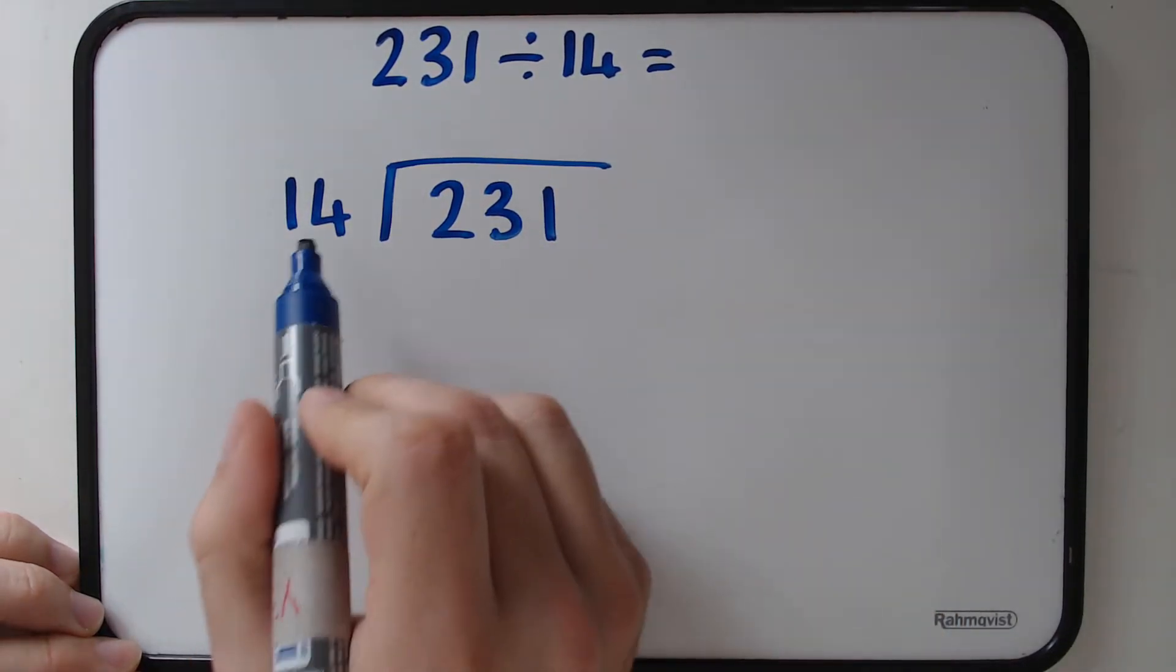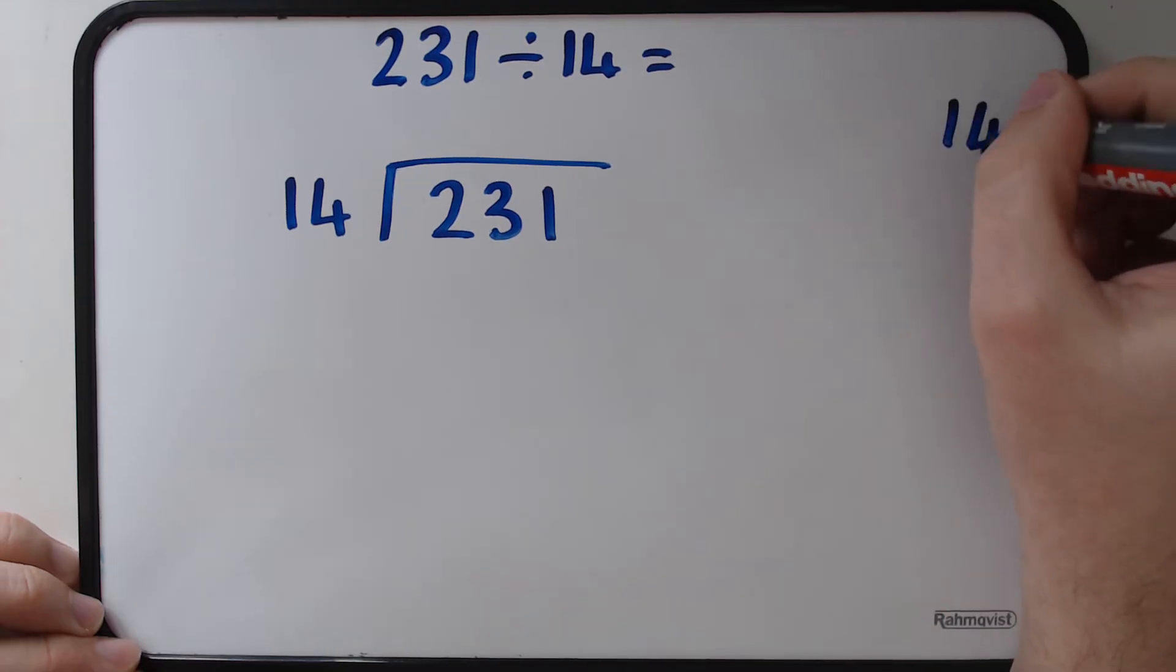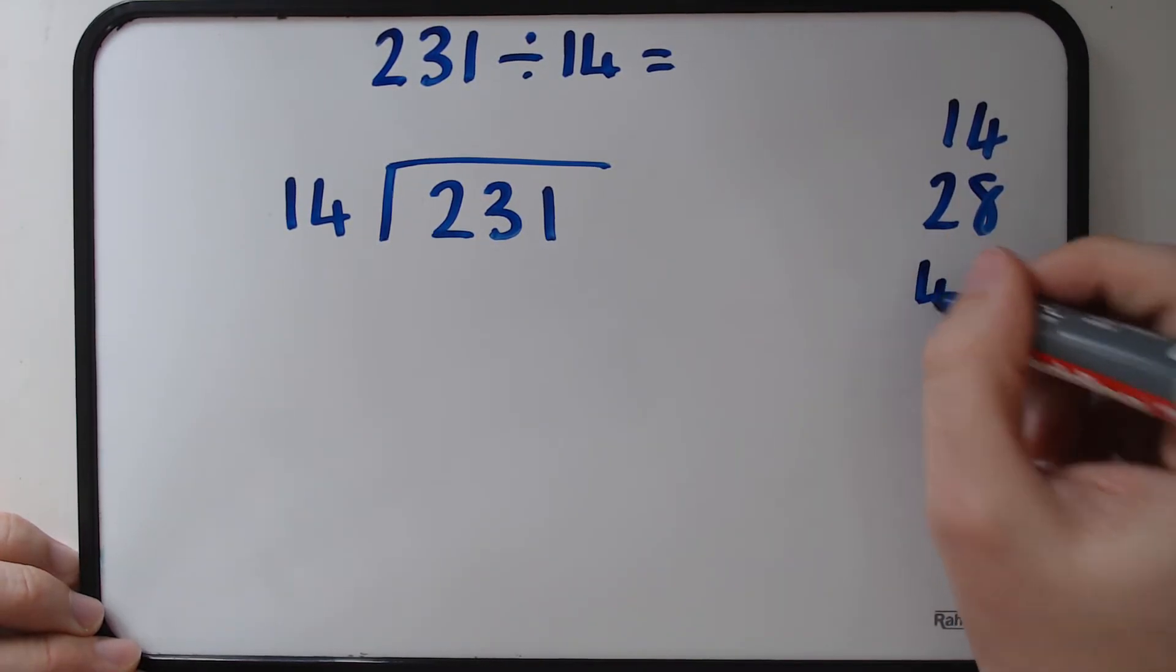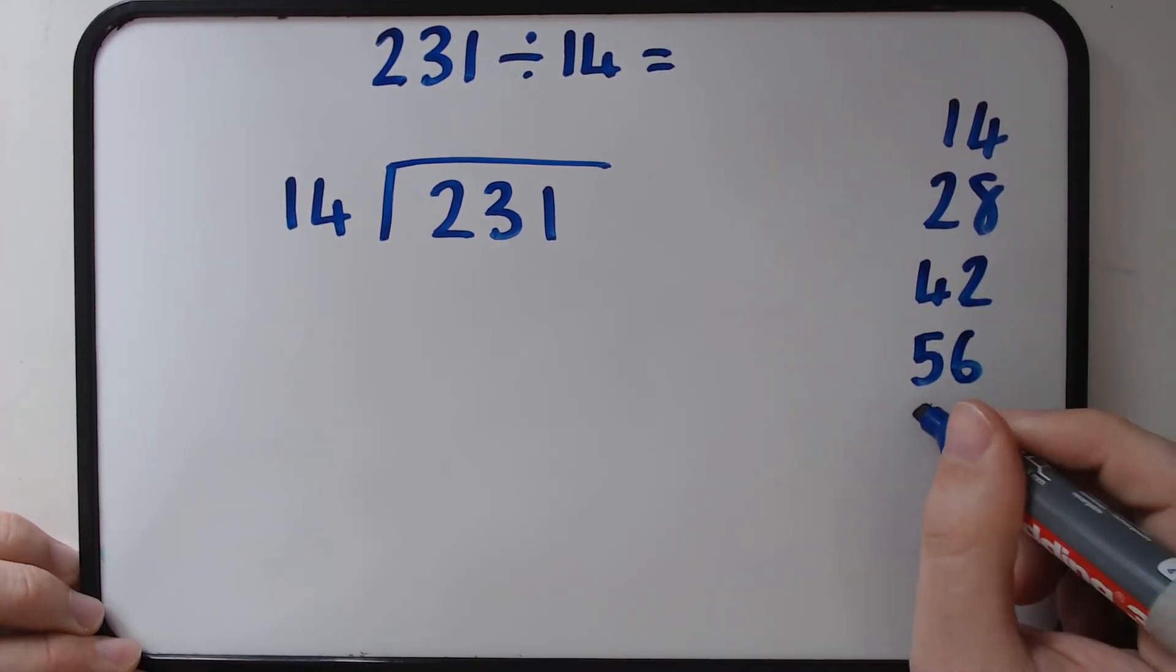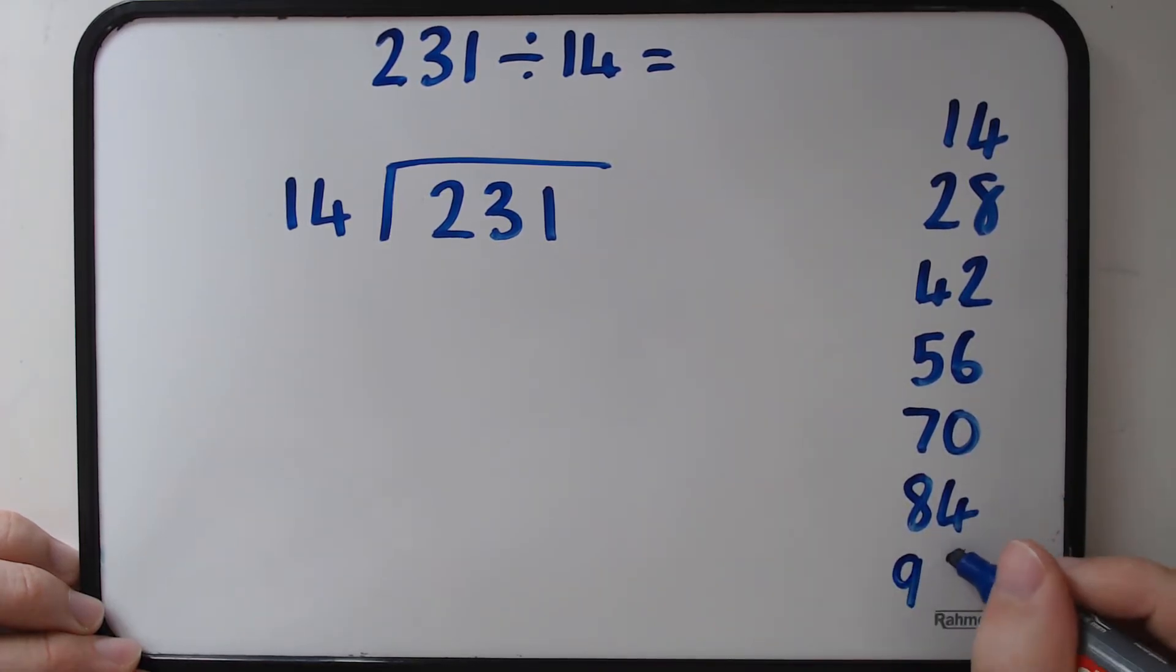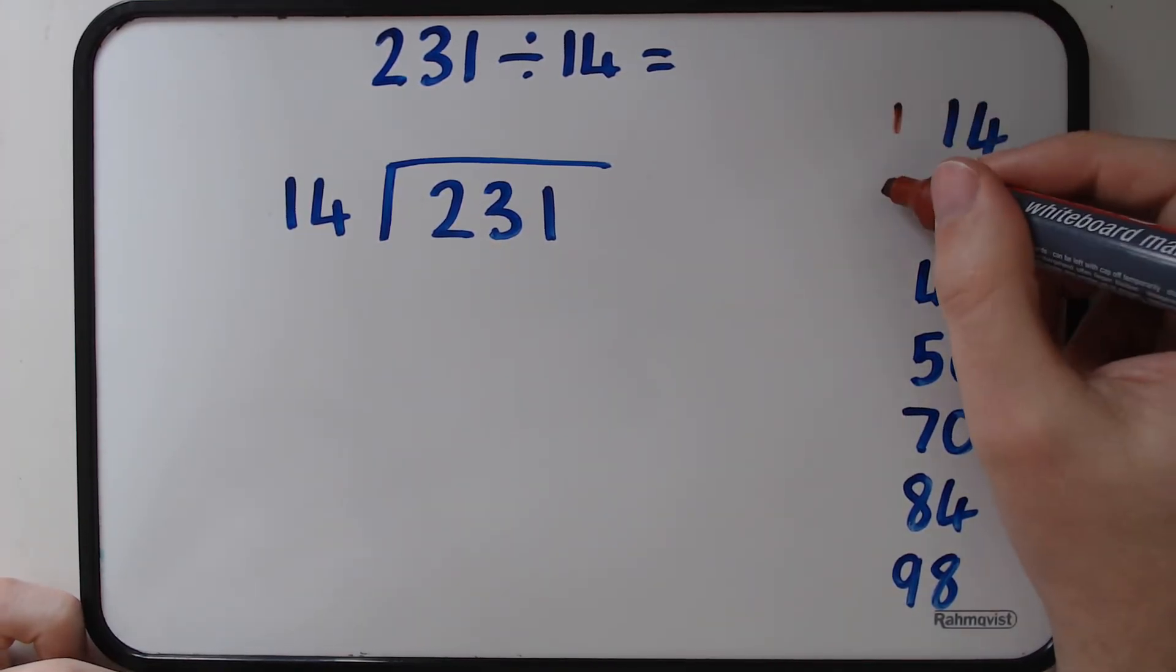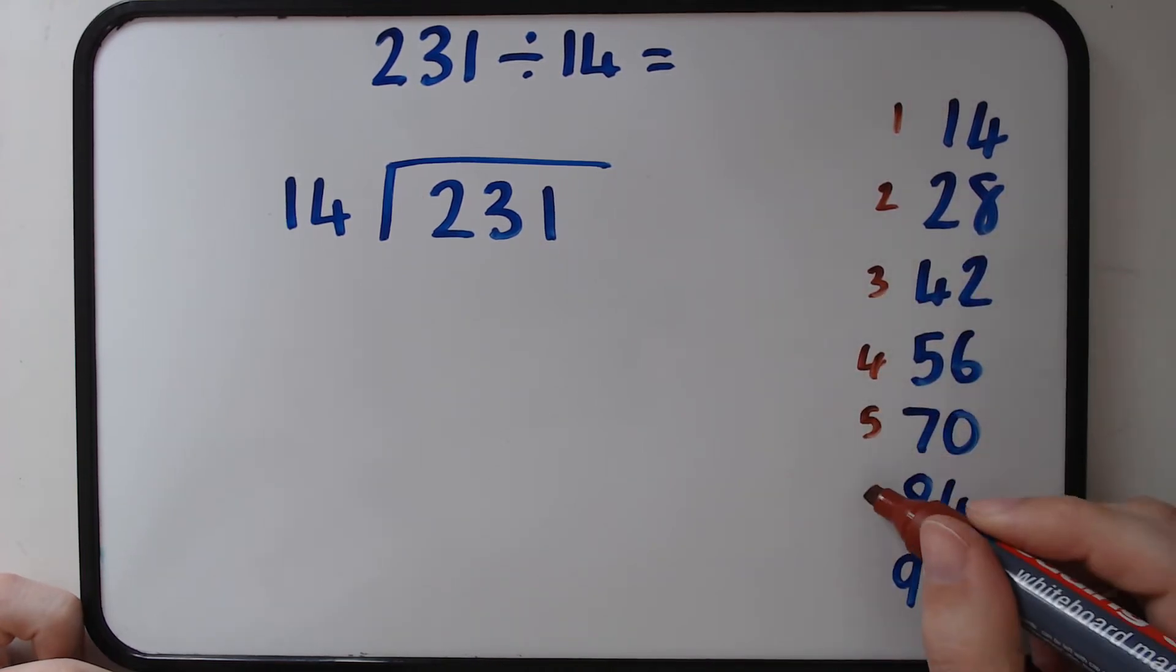The main difference this time is we're going to very quickly write out our 14 times table on the side of our board. Year 6 has suggested do this for their sats because it speeds up their long division calculations, particularly when you have trickier numbers. So we're just going to go down to 7 lots. We might need more, we might not. We'll see as we go along. I'm numbering them just to make it really easy so I can see how many 14s there are there.